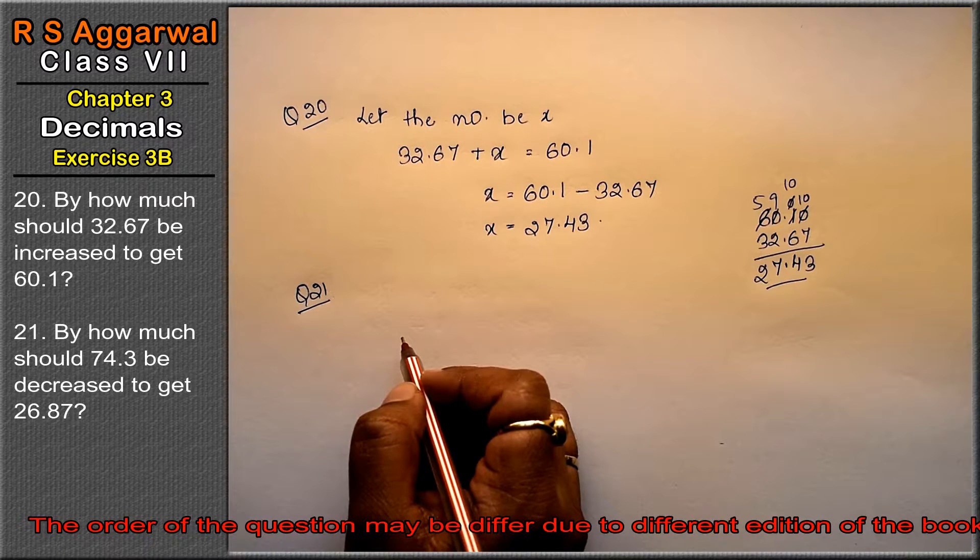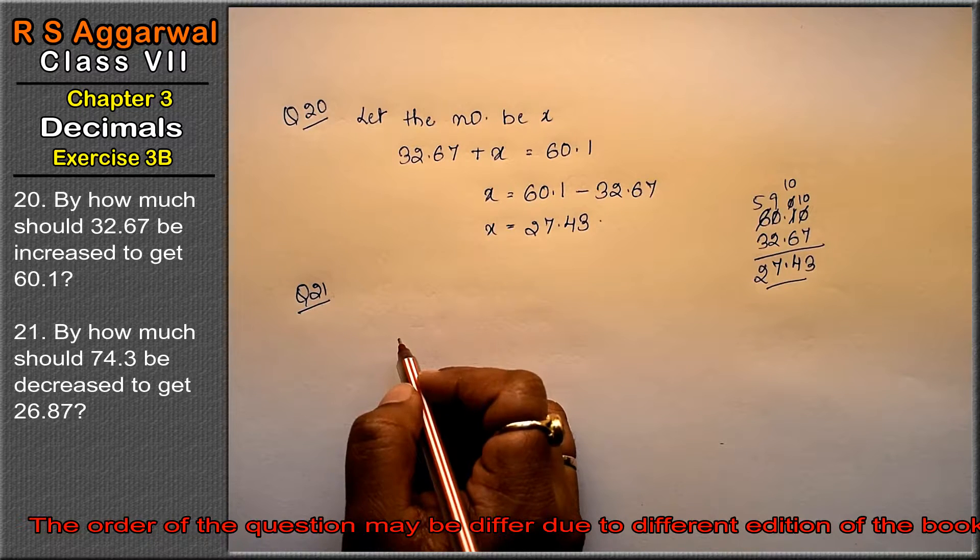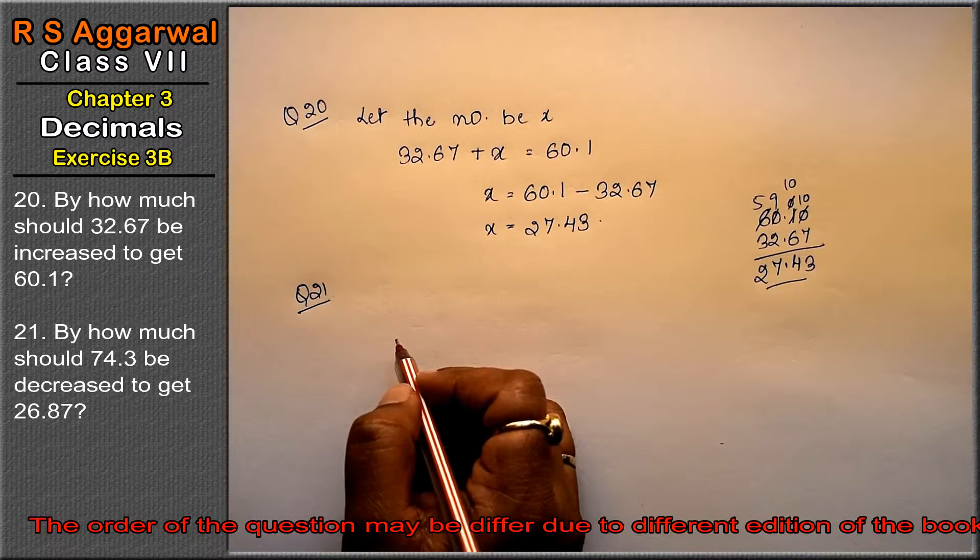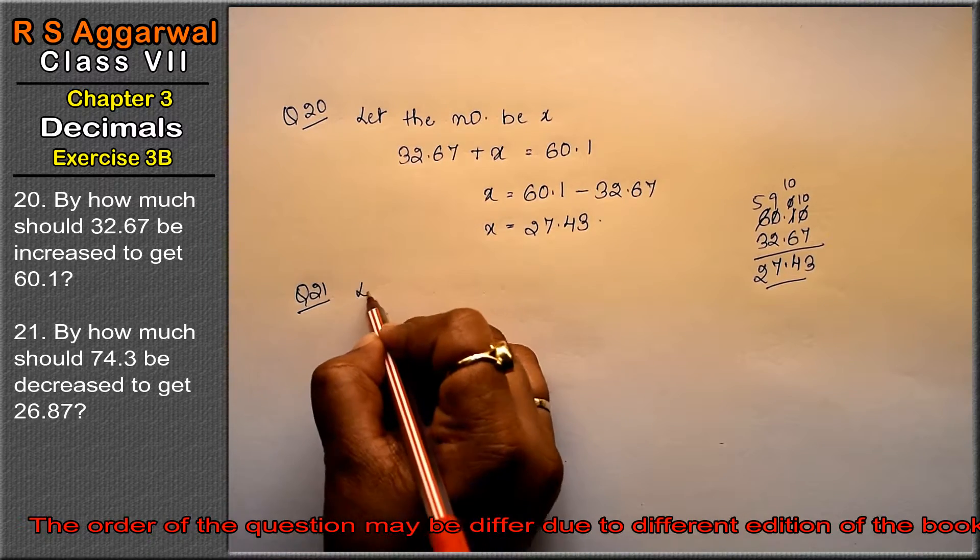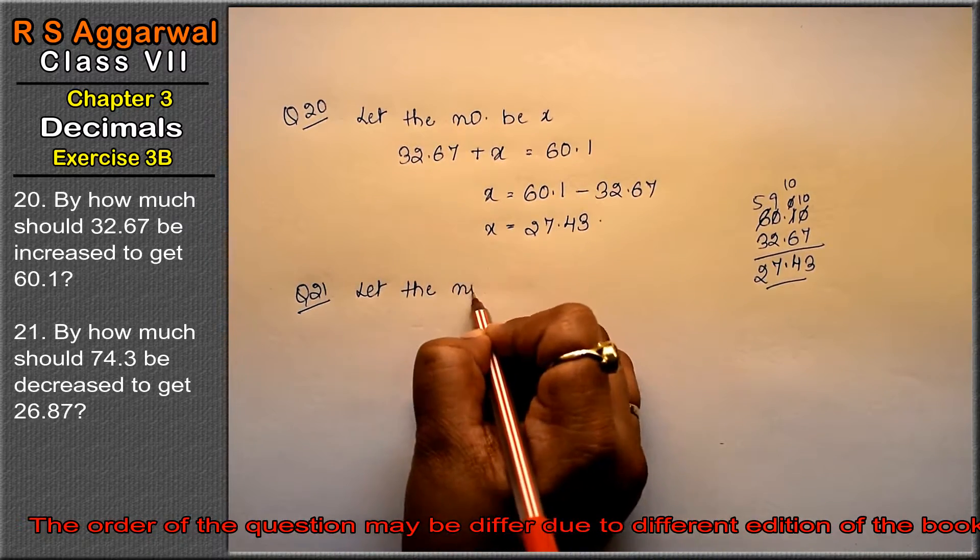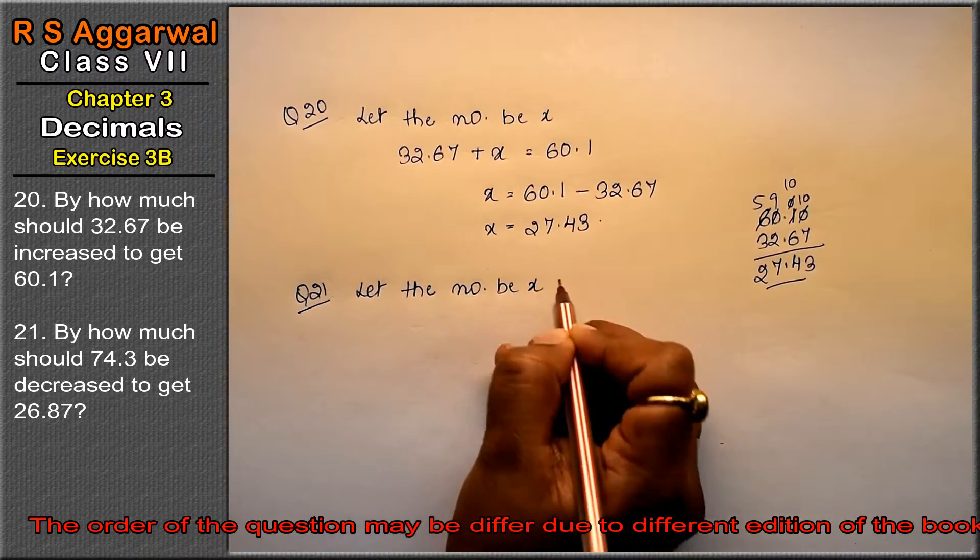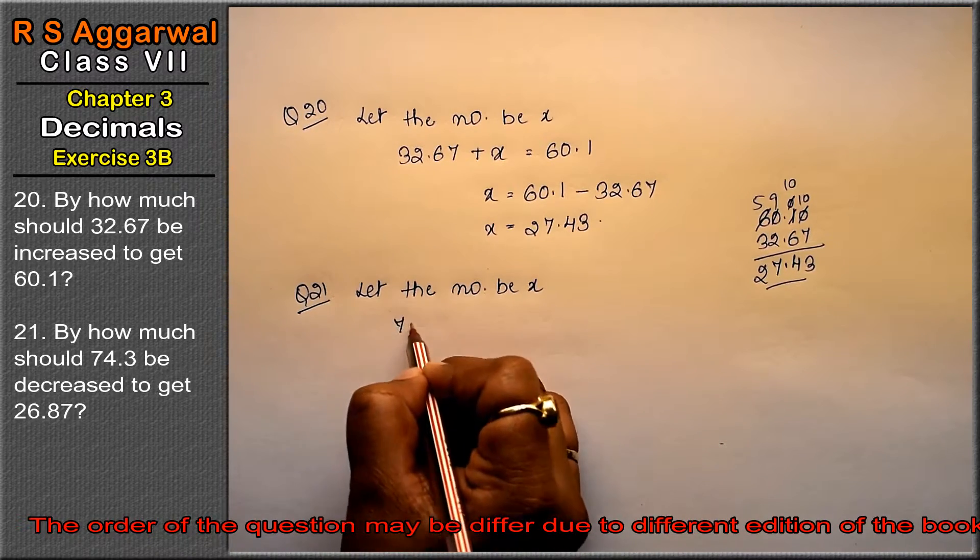Let's do question number 21. Question number 21 is: by how much should 74.3 be decreased to get